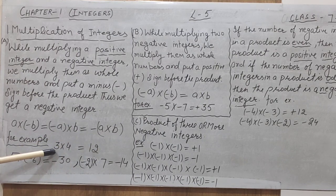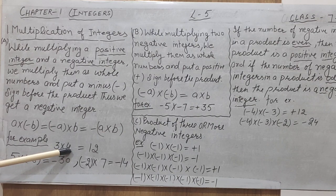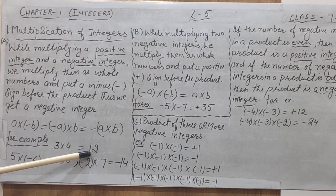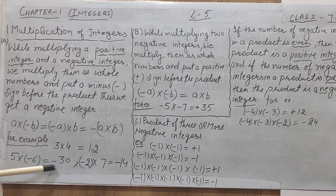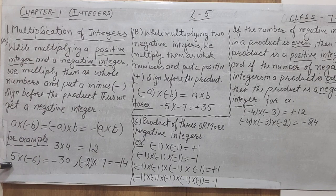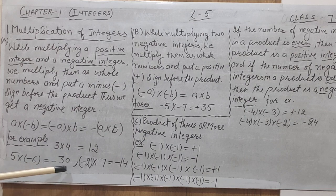For example, if 3 is multiplied with 4, we get 12. Since 3 is positive and 4 is positive, we get a positive result. Now, let us see an example: first integer is plus 5, second integer is minus 6. One positive and one negative, so the result is negative. The numbers 5 and 6 are multiplied: 5 into 6 gives us 30, so the answer is minus 30.